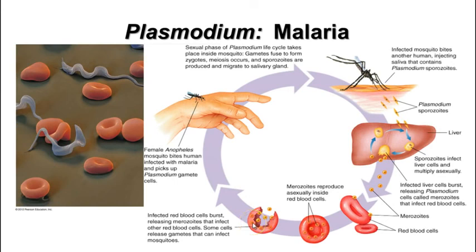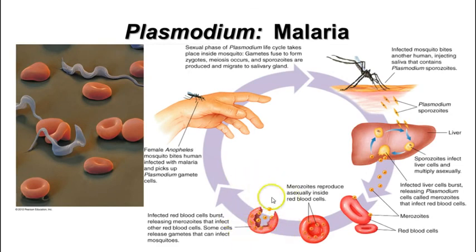Malaria causes recurring bouts of very high fever and violent chills. The fever and chills repeat every three to five days depending on the species. This is the point when those red blood cells are opening — that causes damage to your cells and stimulates a fever response, which is one of your body's ways to ward off infections. Very nasty disease.